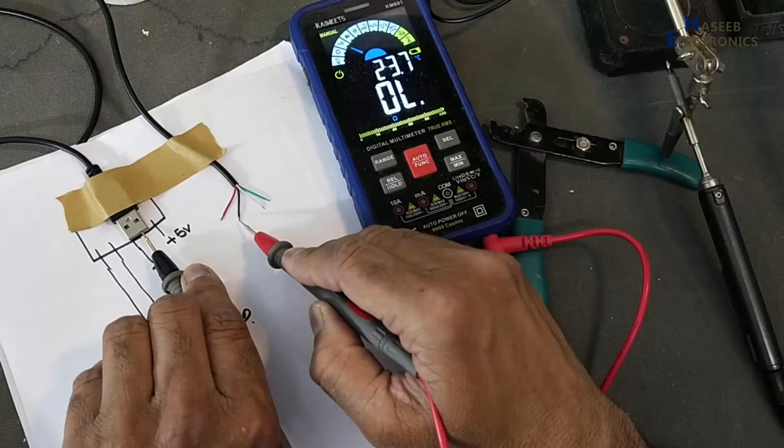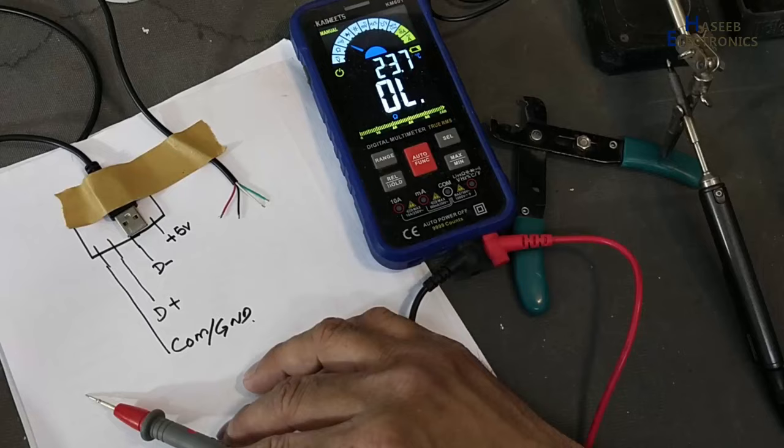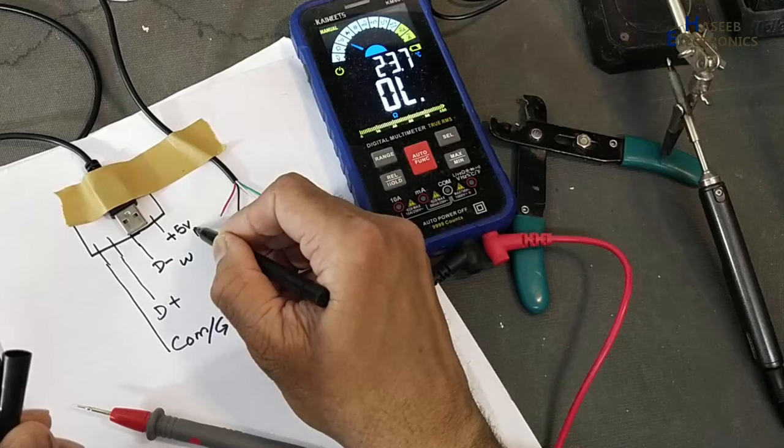Second wire. This is data negative. White data negative. Data negative, white. Red.